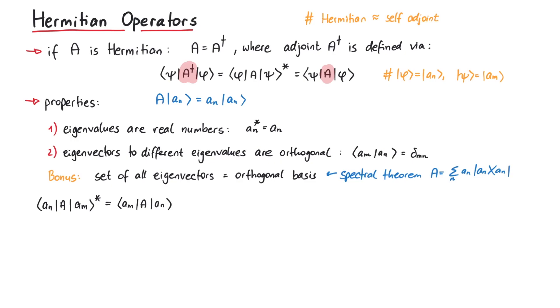If we let the operator act on its eigenstates, we get the corresponding eigenvalue, so am on the left and an on the right. We must not forget about the complex conjugate on the left-hand side of the equation, which results in the complex conjugate of the eigenvalue am, and the complex conjugate of an inner product can be resolved by exchanging the two states.